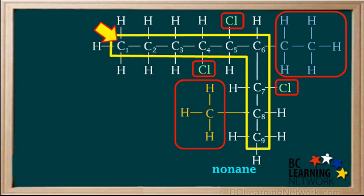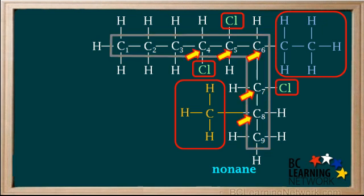Let's try numbering the carbons starting on the left. The name will contain the numbers of the carbon atoms that have groups attached to them. In this case, carbons 4, 5, 6, 7, and 8 have groups attached to them. Remember, we don't count hydrogen as a group. So the name would contain the set of numbers 4, 5, 6, 7, and 8.